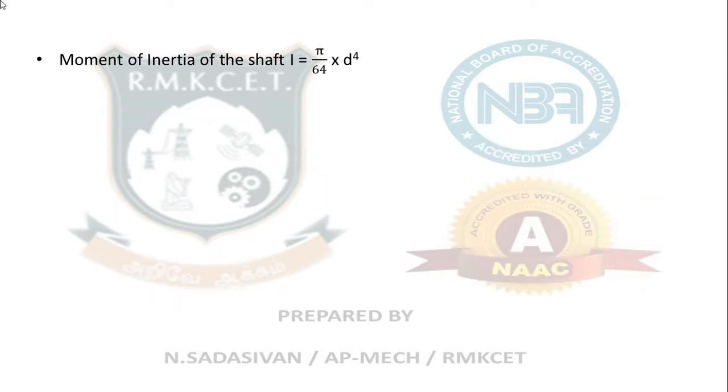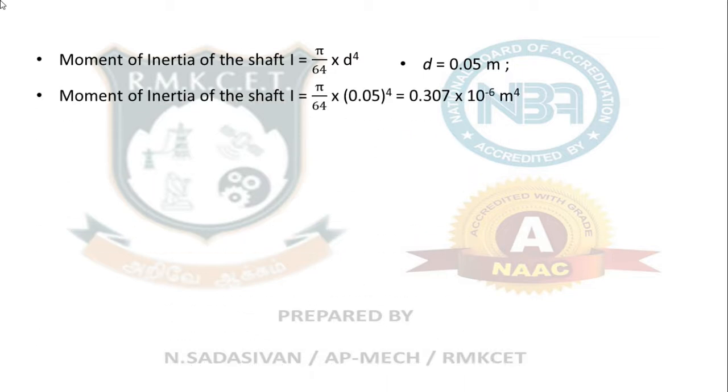Moment of inertia of the shaft, you are going to find out π/64 × d⁴, diameter is 0.05. Moment of inertia, you substitute 0.05 in place of the diameter power 4 and you find 0.307 × 10⁻⁶ m⁴.